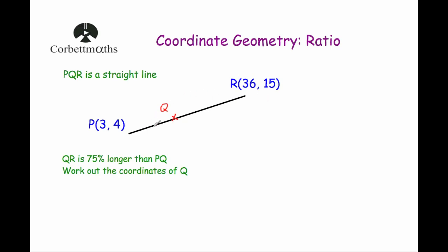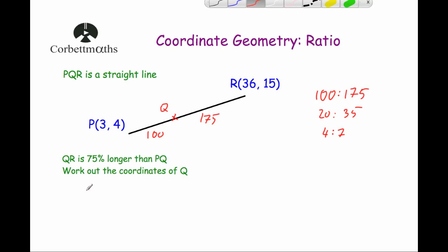The first thing I'll do is create a ratio. For PQ I'll call that 100, and QR would be 75% larger, so 175. Writing that as a ratio: 100 to 175. Dividing both by 5 gives 20 to 35, and dividing by 5 again gives 4 to 7. So the ratio of PQ to QR is 4 to 7, which will be quite useful.